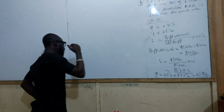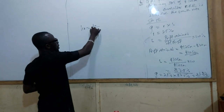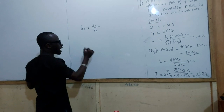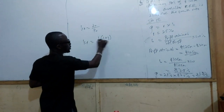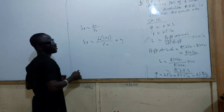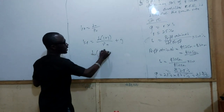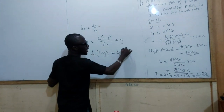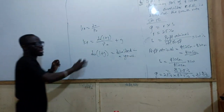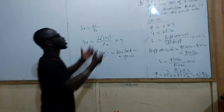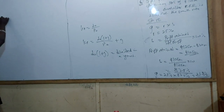We've looked at the constant dividend where KE equals D0 over P0, and the constant growth in dividend where KE equals D0 times (1 plus G) over P0, plus G. Note that D0 times (1 plus G) is the same as the dividend in a year's time. Now let's crunch some numbers on how we can calculate the cost of capital for a company.